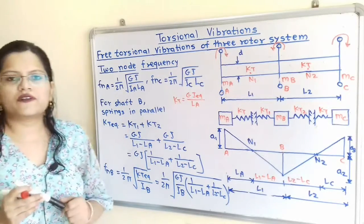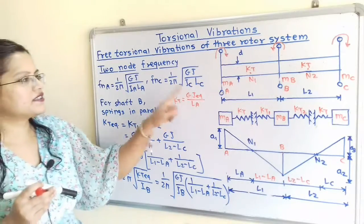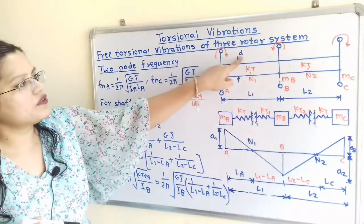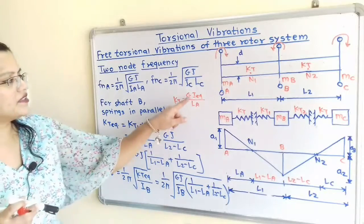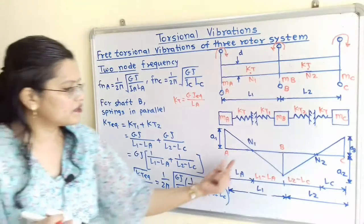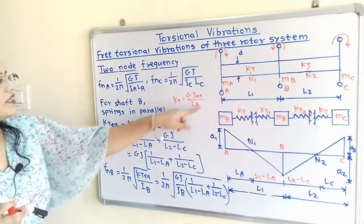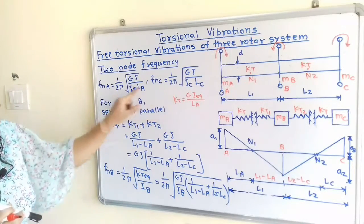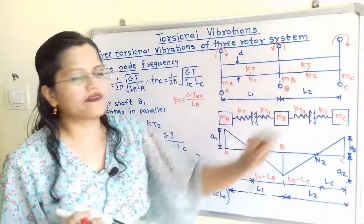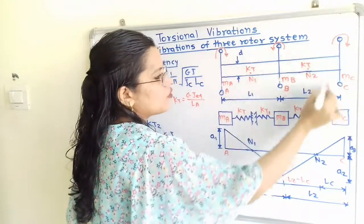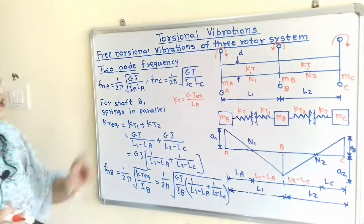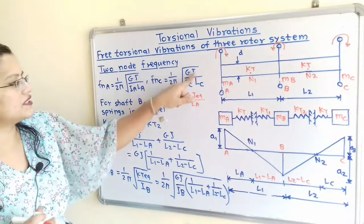G is the modulus of rigidity related to the shaft material, and J is the polar moment of inertia calculated as π over 32 times diameter D raised to the power 4, giving J equivalent. Similarly, the natural frequency for rotor C, which also has only one part of the shaft connected, is FnC equals 1 over 2π times the square root of GJ divided by IC times LC.